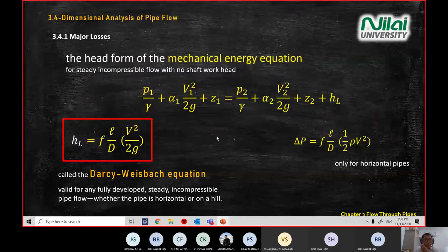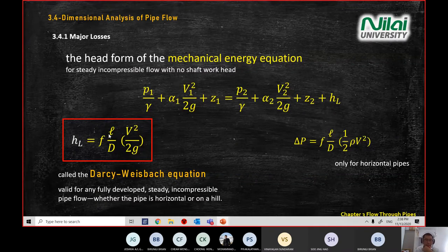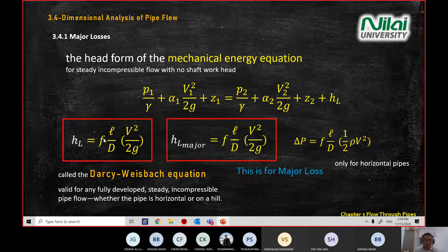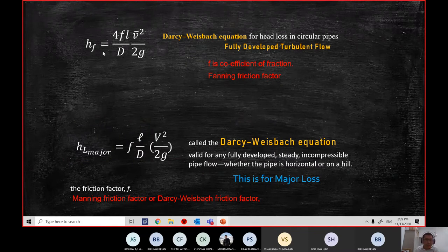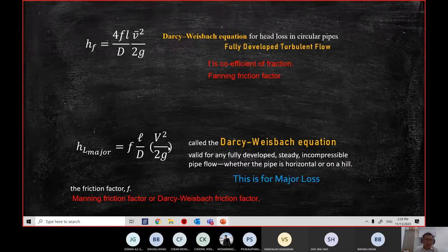When you look at major loss, we also have the Darcy-Weisbach equation. But this equation was developed using the mechanical energy equation. So when we make a comparison, these two are both for major head loss. If I put these two equations side by side, you will see that they are both called Darcy equations, however the structure is a bit different. So I need to explain it a little bit.